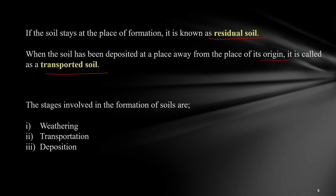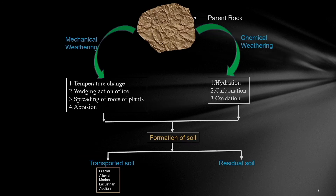The different stages involved in the formation of soil are: first, weathering; second, transportation of the soil; and third, deposition. The rock from which soils are made is the parent rock. In the weathering process there are two kinds of weathering — mechanical and chemical. Mechanical weathering involves agencies such as change in temperature, the wedging action of ice, spreading of roots of plants, and abrasion. Hydration, carbonation, and oxidation play a role in chemical weathering.